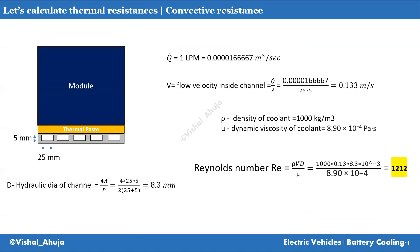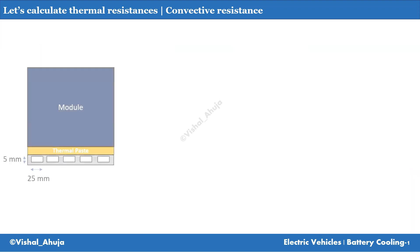This is a laminar flow because the Reynolds number is less than 2000.